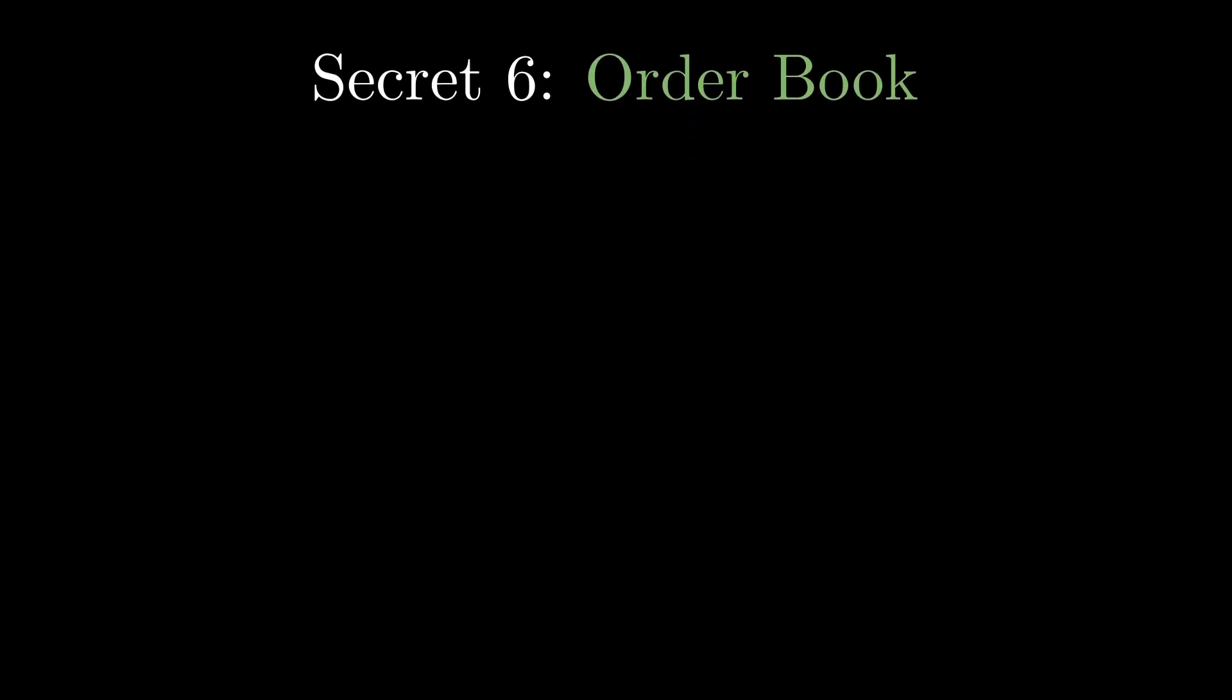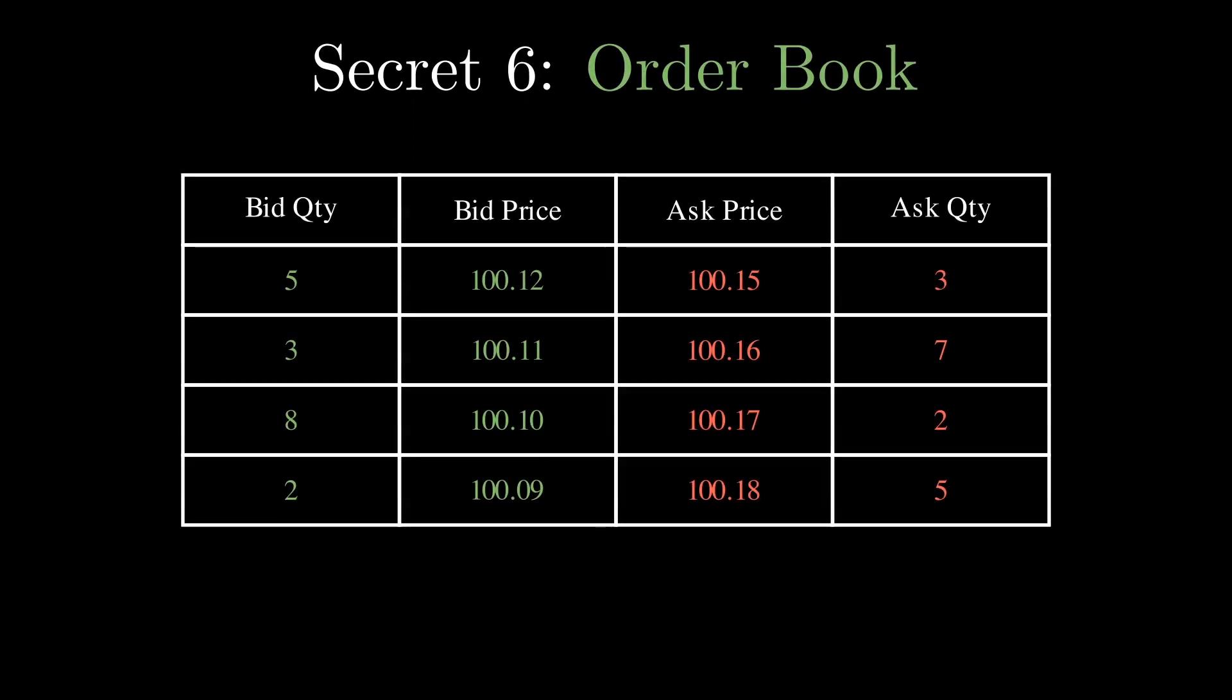The sixth secret is that they have access to the order book. Price data alone doesn't give much of an edge for intraday trading, but the order book does. It's at the heart of every market and shows the liquidity that allows buying and selling. It has two sides.